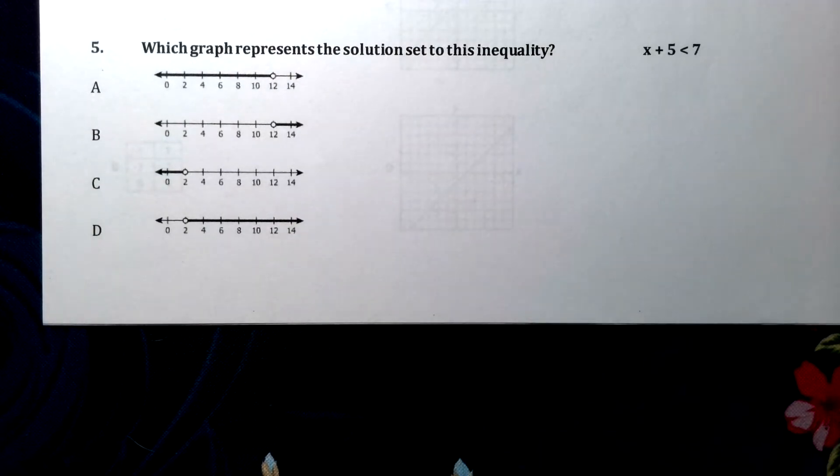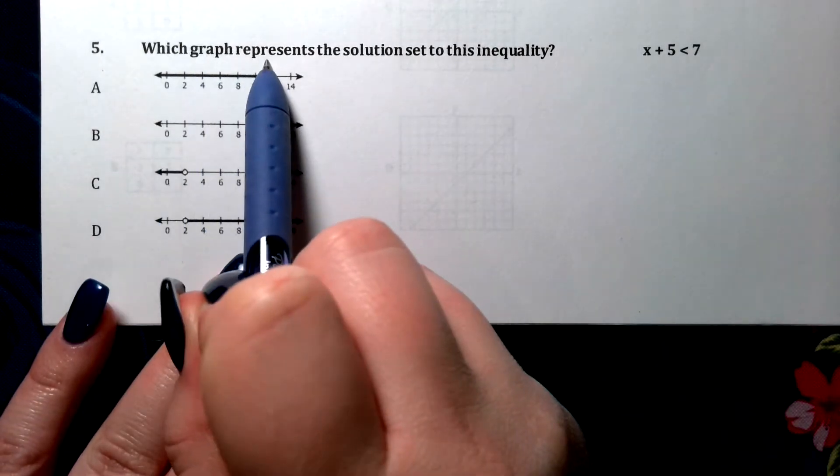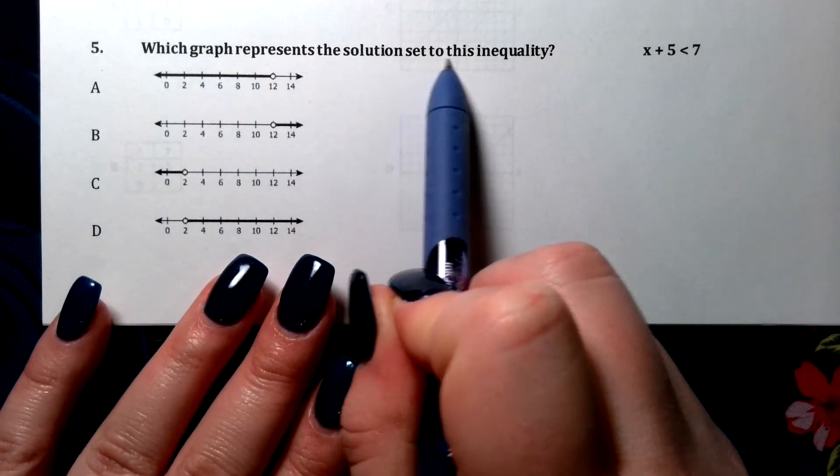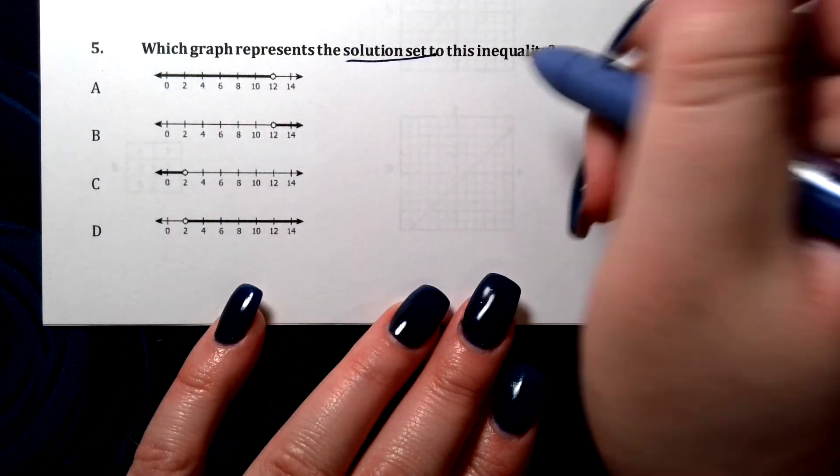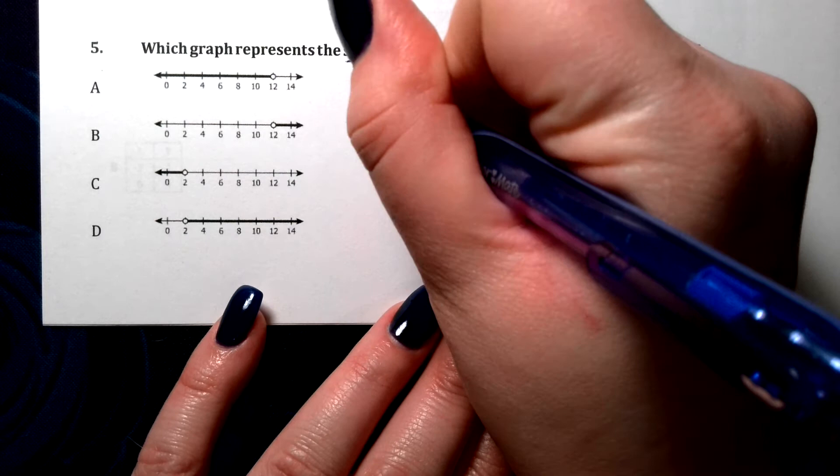Okay, so we've got another inequality problem, number five, but this one says, which graph represents the solution set to this inequality? Remember, solution set with inequalities means there's more than one answer.